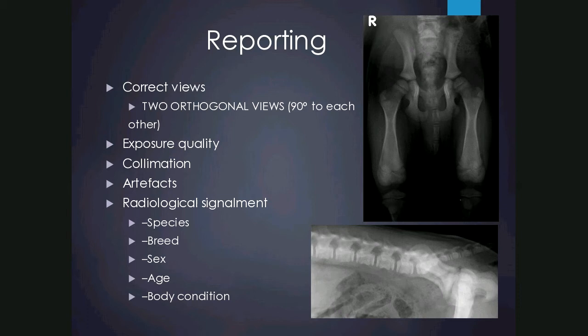Radiological signalment is a very important concept, as it gives us an idea of what conditions we expect in a certain patient. Knowing the signalment helps us decide if a diagnosis is likely. For example, having a radiograph of the abdomen of a male dog would make the diagnosis of pyometra impossible.